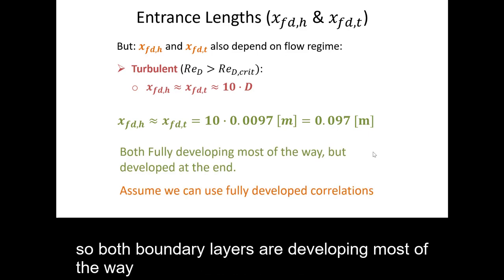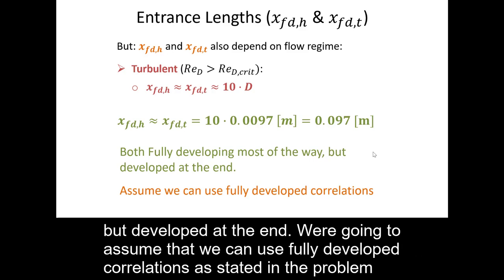So, both flows are developing most of the way, but developed at the end. We're going to assume that we can use fully developed correlations as stated in the problem.